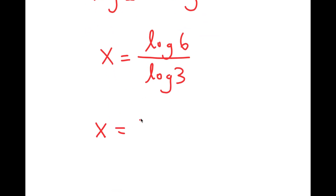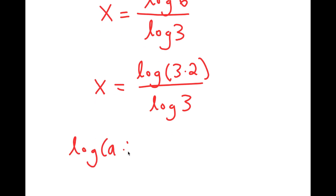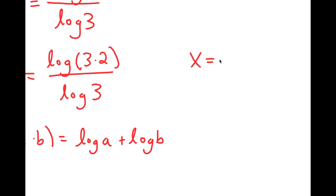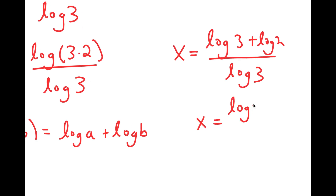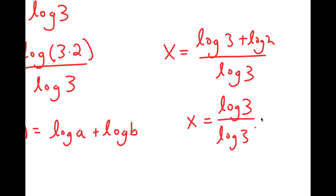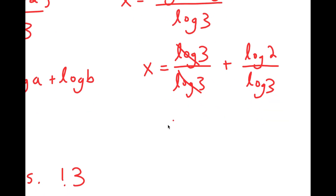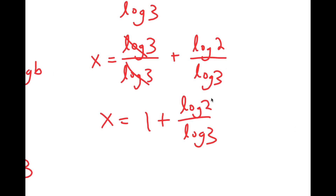Now log 6 is the same thing as log of 3 times 2. If I have something in the form log of a times b, this is equal to log a plus log b. So log of 3 times 2 turns into log 3 plus log 2, and I have this over log 3. This turns into log 3 over log 3 plus log 2 over log 3 — these two cancel out — and I get 1 plus log 2 over log 3. So this is my answer.